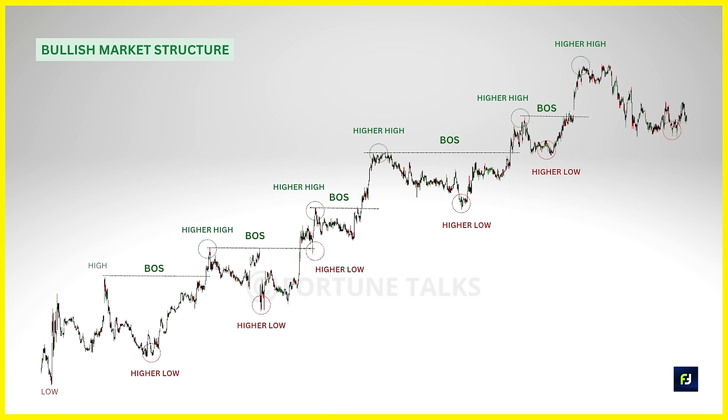Before finishing this episode, I need to discuss a few more terms: strong highs, strong lows, weak highs, and weak lows. A weak high or weak low refers to those swing highs and lows which have a greater possibility of getting swept. For example, a higher high is considered a weak high as it has a good possibility of getting taken out by a bullish BOS, and a higher low is considered a weak low as there is a good chance a Change of Character can take it out. During a bearish structure, a lower low is a weak low and a lower high is a weak high.